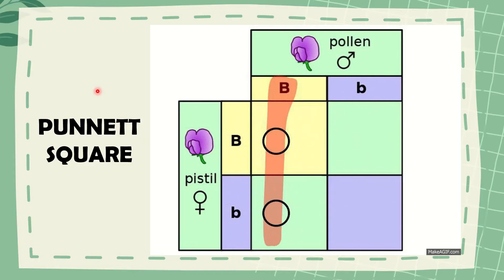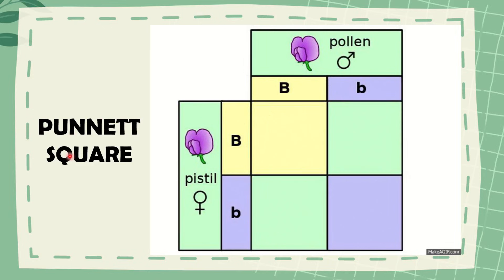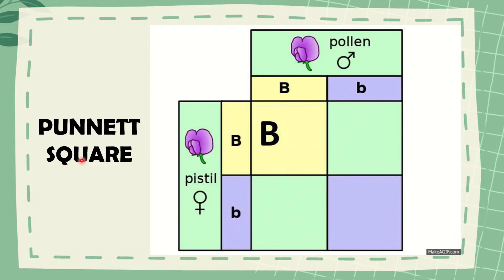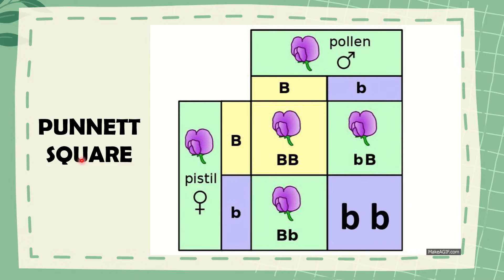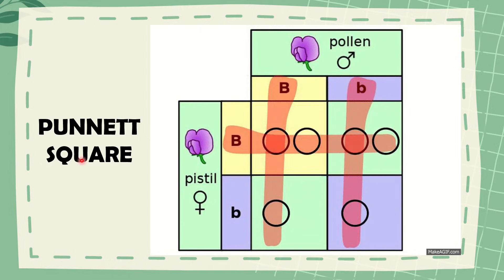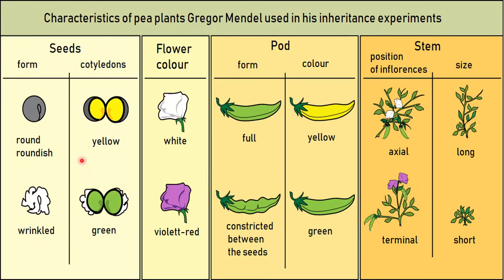Mendel's crosses can be recorded in a chart called a Punnett Square. The Punnett Square helps to predict the outcome of a given cross — it determines the possible combination of genes in a cross. The use of a Punnett Square can be illustrated by solving actual problems, like determining the expected results when two individuals cross. For example, what will be the result if a round seed pea plant is crossed with a wrinkled seed pea plant? Here's how to solve it using a Punnett Square.